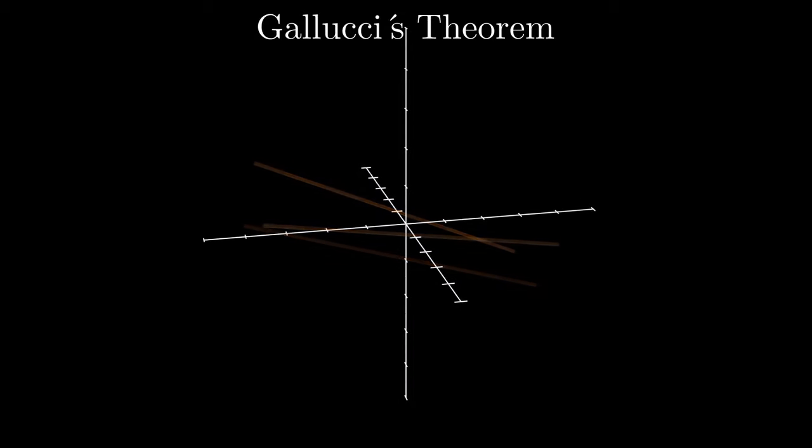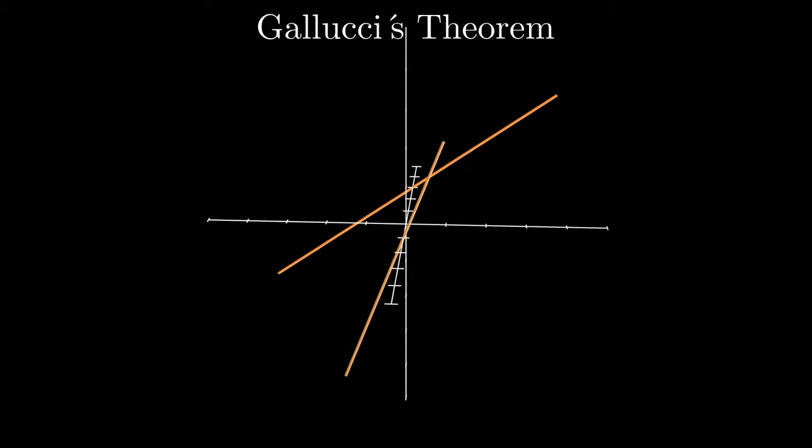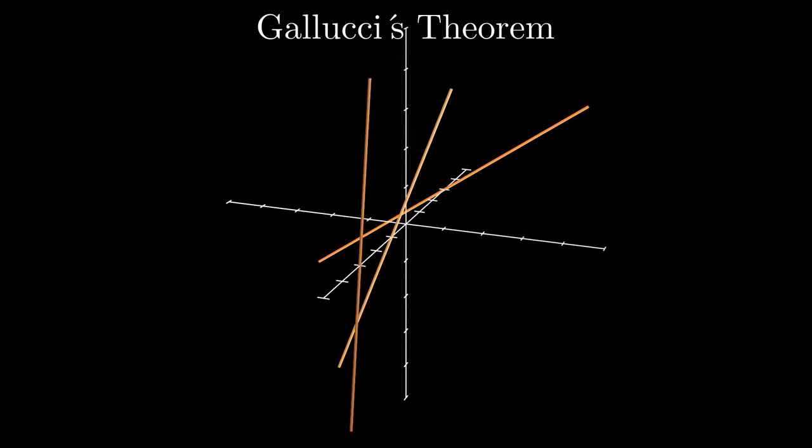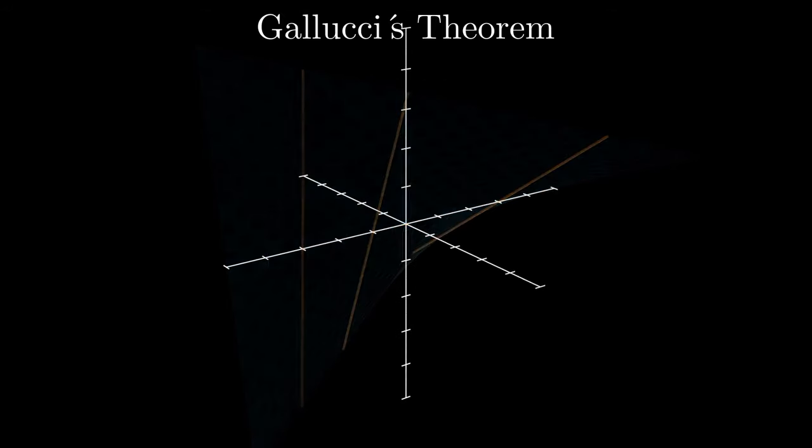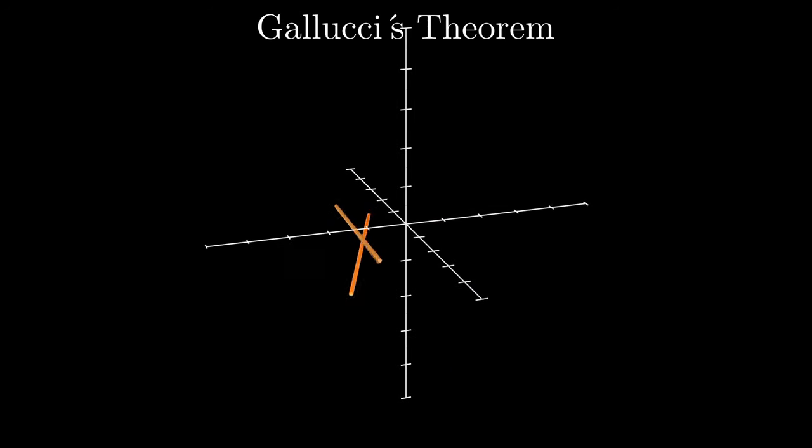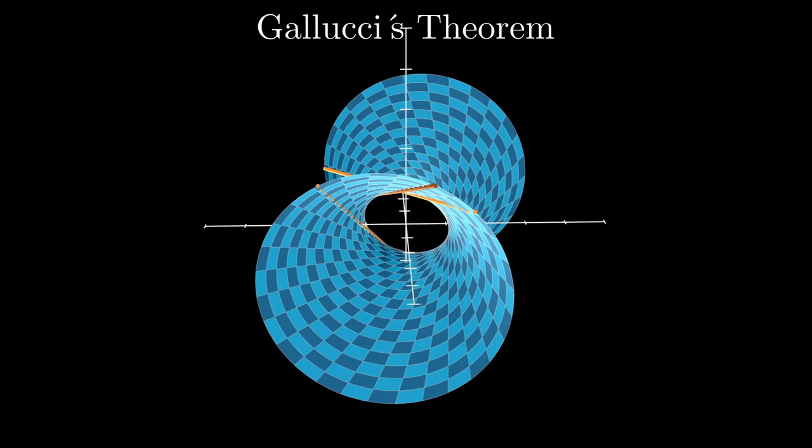There's a special case where all three lines are parallel to the same plane, and in this case, we get a hyperbolic paraboloid. However, if we choose the lines at random, this is almost never the case.